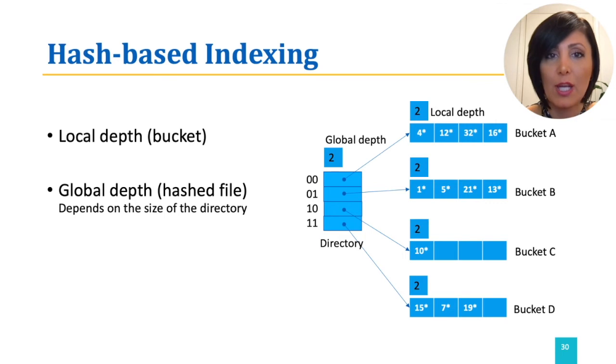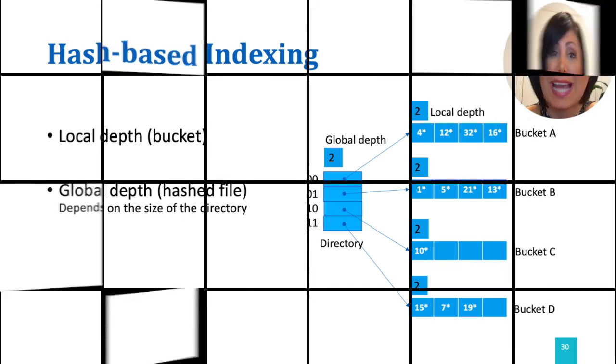If a bucket whose local depth is equal to the global depth is split, the directory must be doubled. Going back to our example of inserting 20 to bucket A. And the split operation that we are expecting since these two numbers are both 2 and therefore equal. Let's see what happens.